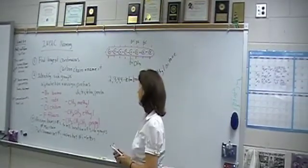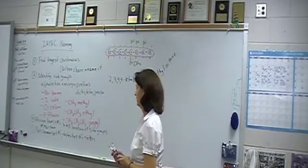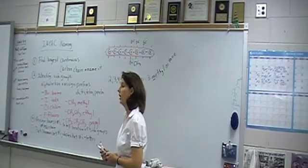Number three says, assign lowest numbers to tell location of side groups. Assign lowest numbers to tell location of side groups.